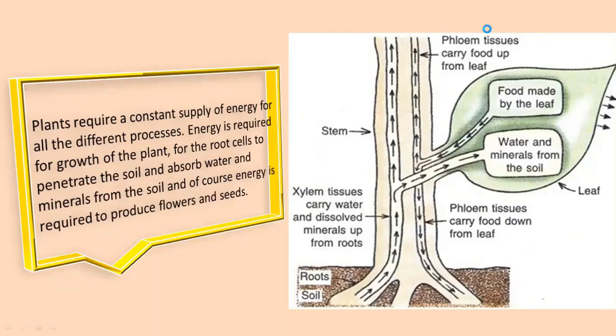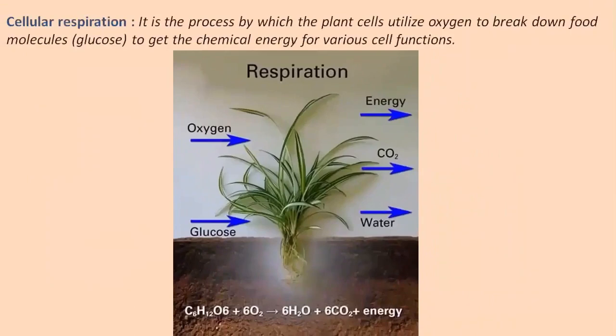So how do plants get energy from glucose? By undergoing the process of respiration. Respiration, also known as cellular respiration, is the process by which plant cells utilize oxygen to break down the food molecules glucose and get chemical energy for various cell functions.